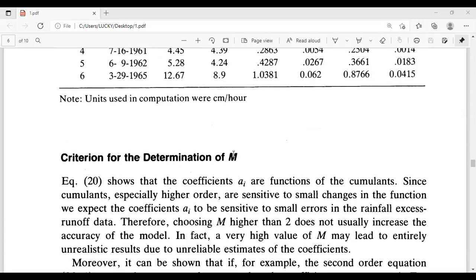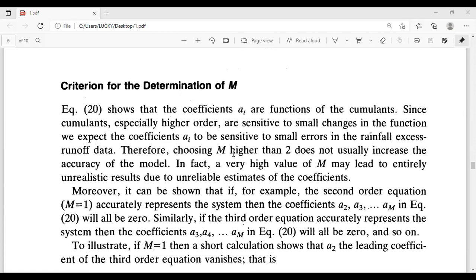Units used in computation was centimeters per hour. Criterion for determination of M. Equation 20 shows that the coefficients ai are functions of the cumulants. Since cumulants, especially higher order, are sensitive to small changes in the function, we expect the coefficient ai to be sensitive to small errors in the rainfall excess runoff data. Therefore, choosing M higher than 2 does not usually increase the accuracy of the model.